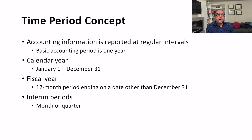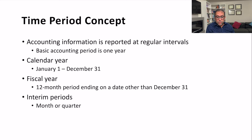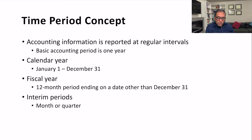The choice of fiscal year often depends on the nature of the business. If there is a seasonal effect, businesses try to align their fiscal year accordingly. Firms can adopt any starting and ending month, as long as the period covers 12 months. Changing the fiscal year frequently is not considered good practice.